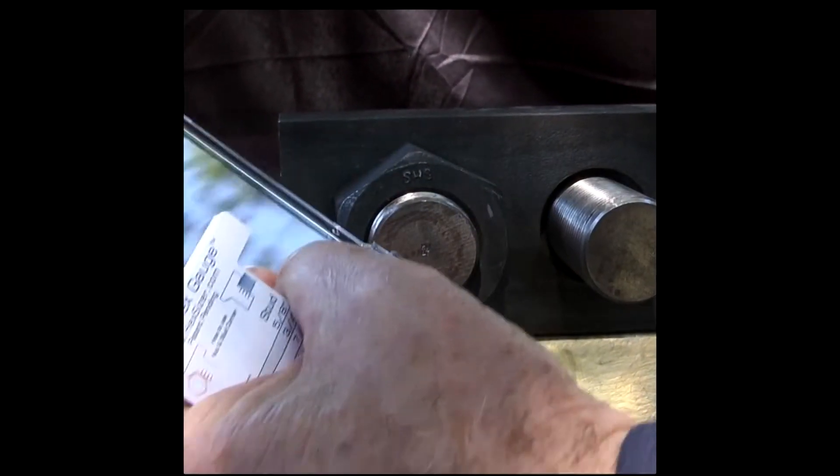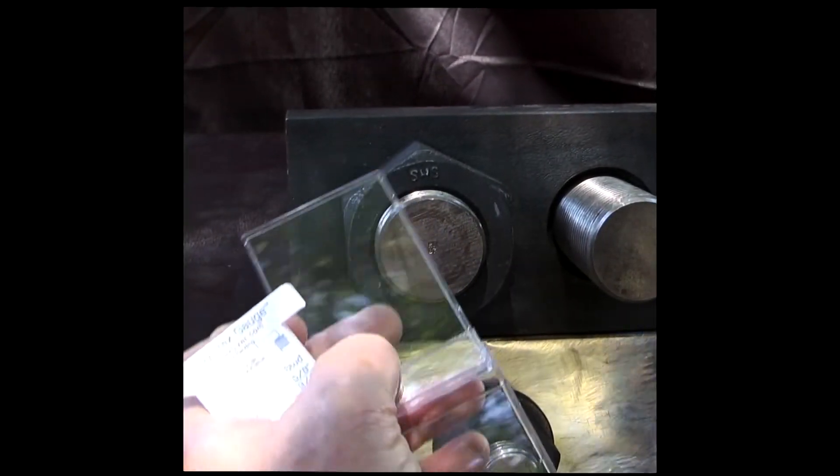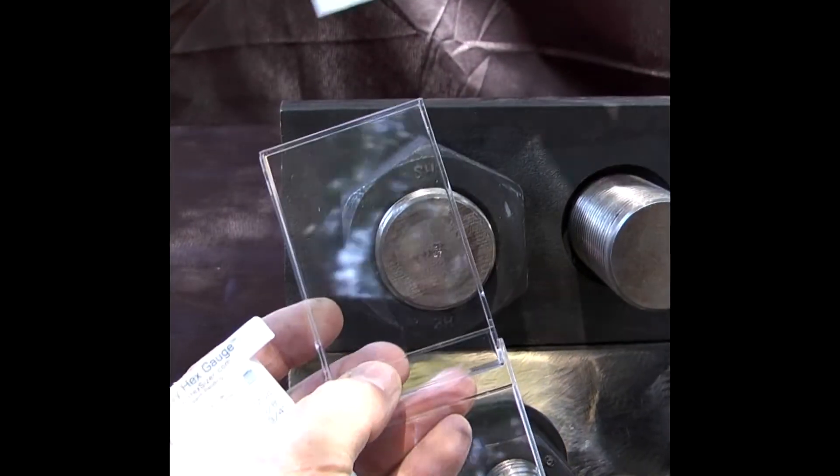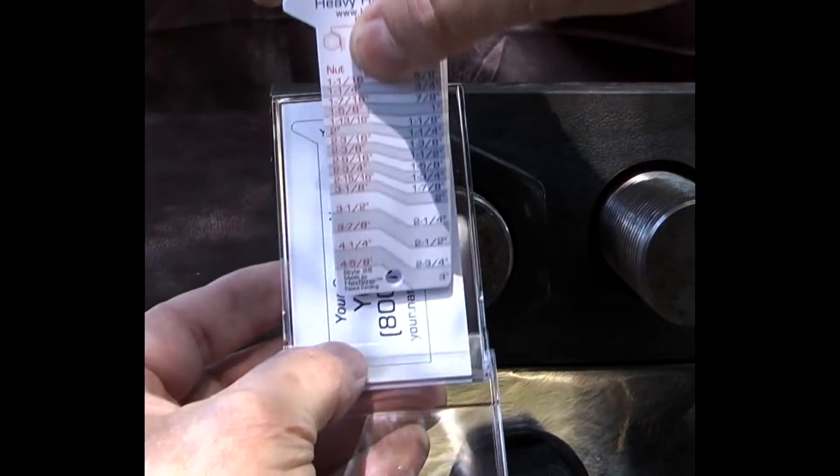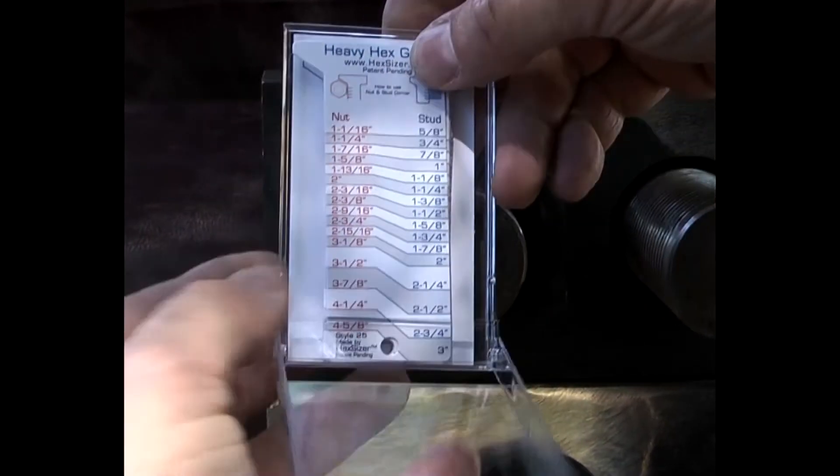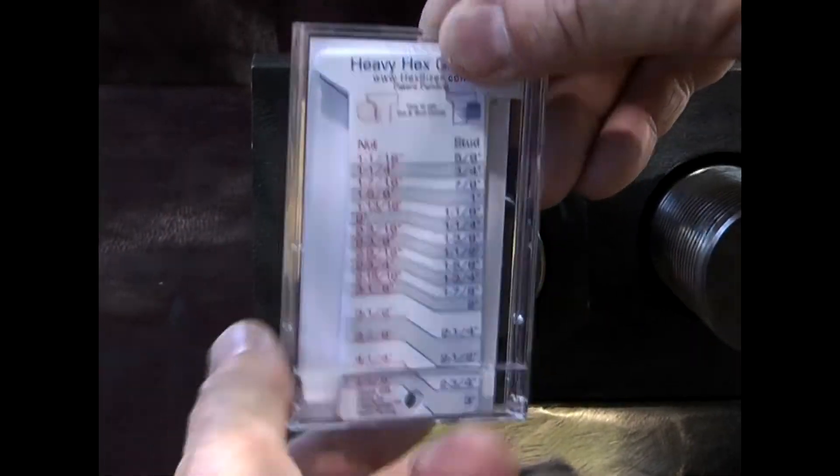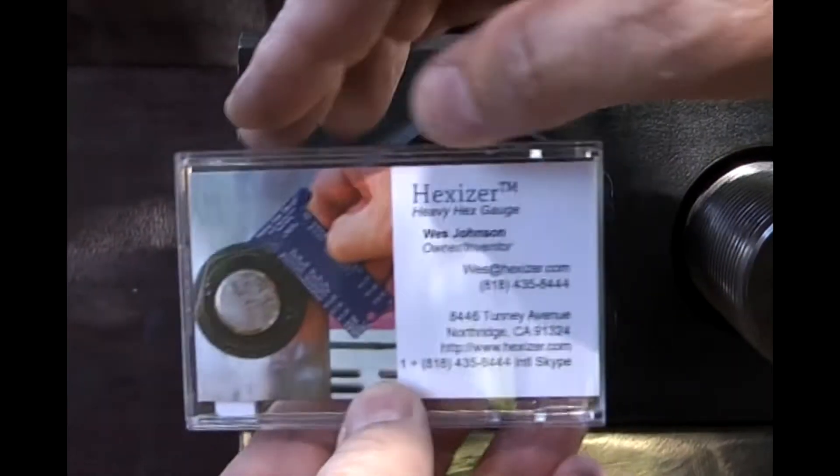They come in a clear gift box that fits your business card perfectly. Put your business card in it, put a stack of heavy hex gauges on top and it looks really nice. Let's see that. Looks good.